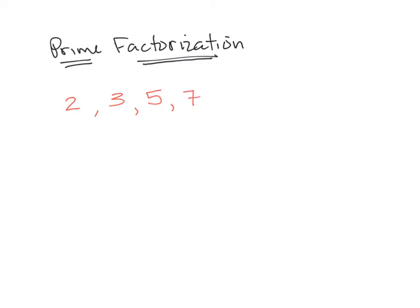7 is prime, 1 times 7 is the only way to make 7. And you're probably starting to think, other than the 2, it must be every odd number. Well, maybe, let's see.